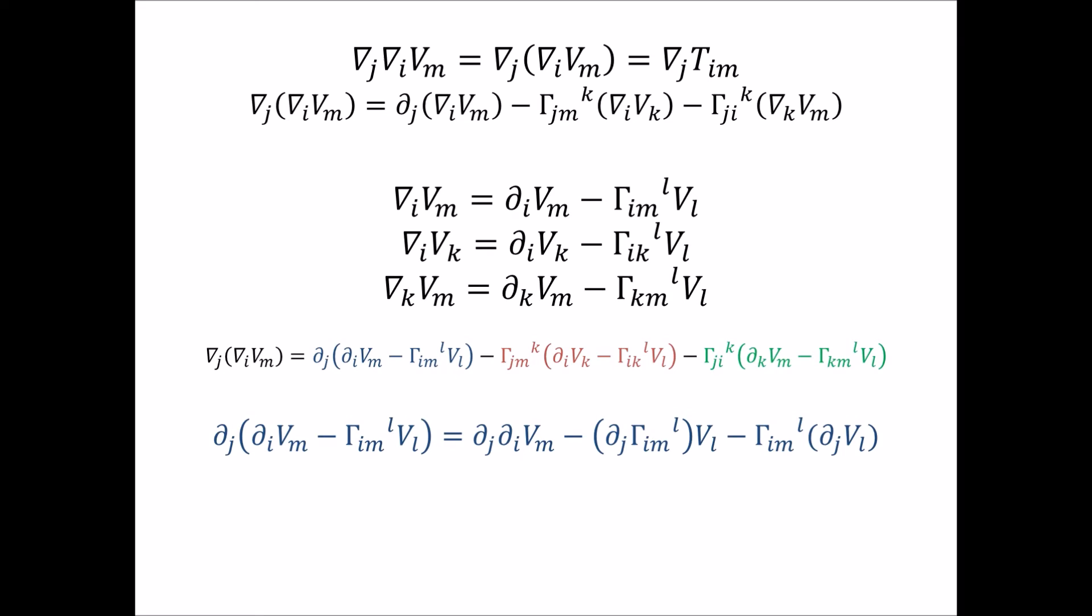So on this first term, what we're going to do is carry through the j derivative to each of the terms. The first term is pretty easy. Now you just have a second derivative, ∂j∂i, acting on v. And on the second term, we're going to have to use the product rule here. So we simply use the product rule and expand out the derivative of the Christoffel symbol times the vector. And we get something like this. So the blue term expands like this.